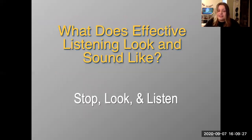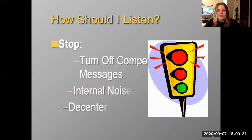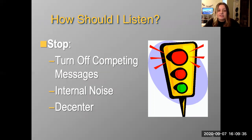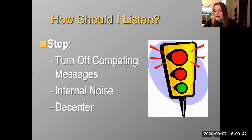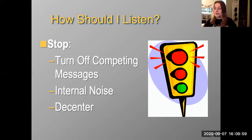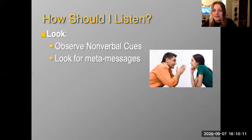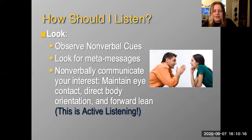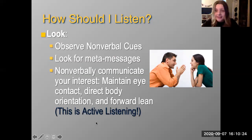What does effective listening look like? Stop, look, and listen — those are our three recommendations. Stop means turning off competing messages, internal noise, and decentering. Some people say they can multitask well, but in multitasking you have to shift your full attention — we have finite attention. Look means looking for nonverbal cues, meta messages, and using your nonverbal communication to regulate the conversation.